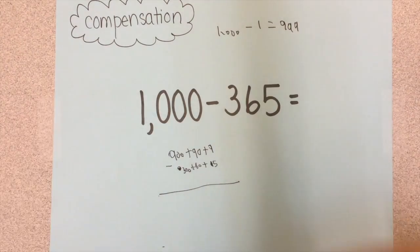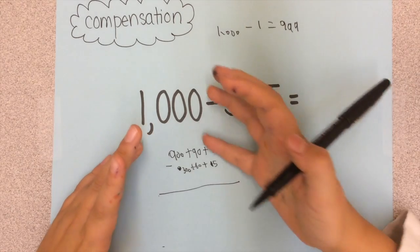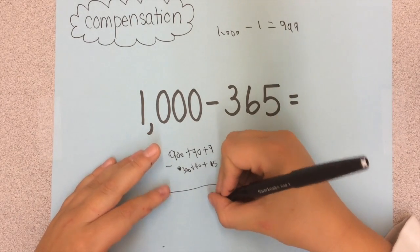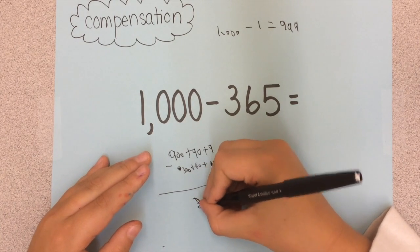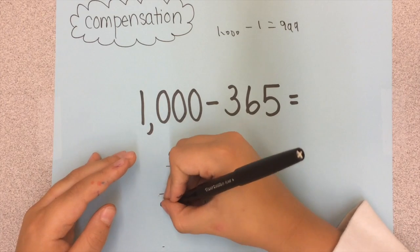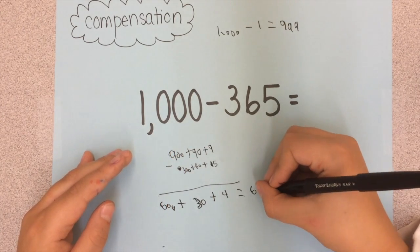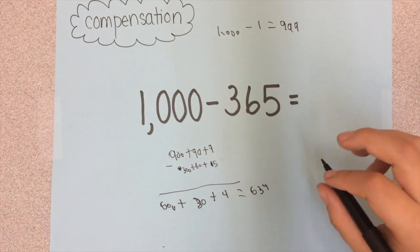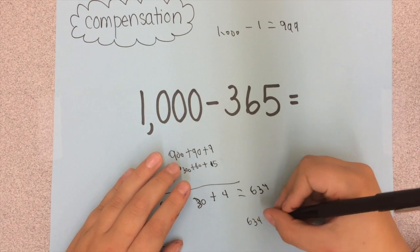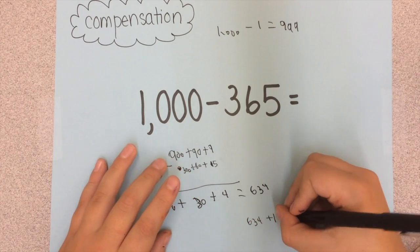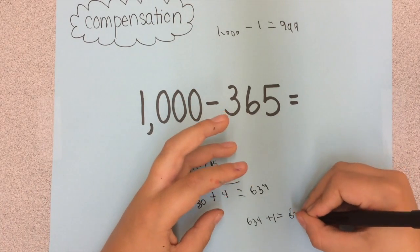And now we just have to subtract down. So I like to start with the ones. 9 minus 5 is 4, plus 30, plus 600, equals 634. And that's not our answer yet. We have to do 634 plus 1 because we subtracted 1 in the beginning, which equals 635.